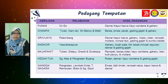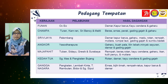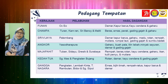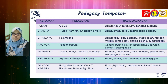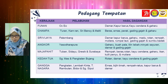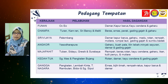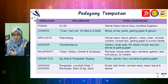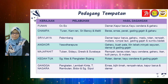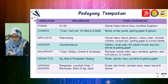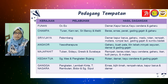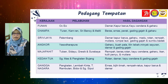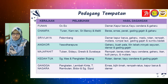Dalam perdagangan tempatan, kita akan tengok kerajaan, pelabuhan yang ada dan hasil dagangan. Yang pertama, Kerajaan Funan — pelabuhan adalah Oceo, hasil dagangan adalah damar, kapur barus, kayu cendana dan gaharu. Kerajaan Campa pula — pelabuhan adalah Turan, Kamran, Sri Banoy dan Maliti, hasil dagangan adalah beras, emas, perak, gading gajah dan gaharu.